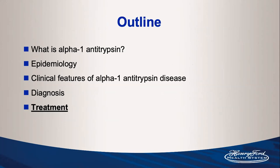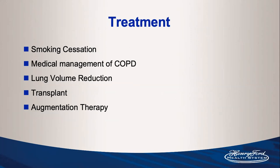The last section covers treatment of alpha-1 antitrypsin disease. Areas I'll cover are smoking cessation as primary and secondary prevention, medical management of COPD, the unique circumstances of lung volume reduction in this population, lung transplant, and augmentation therapy — the only specific treatment for the actual genetic deficiency.